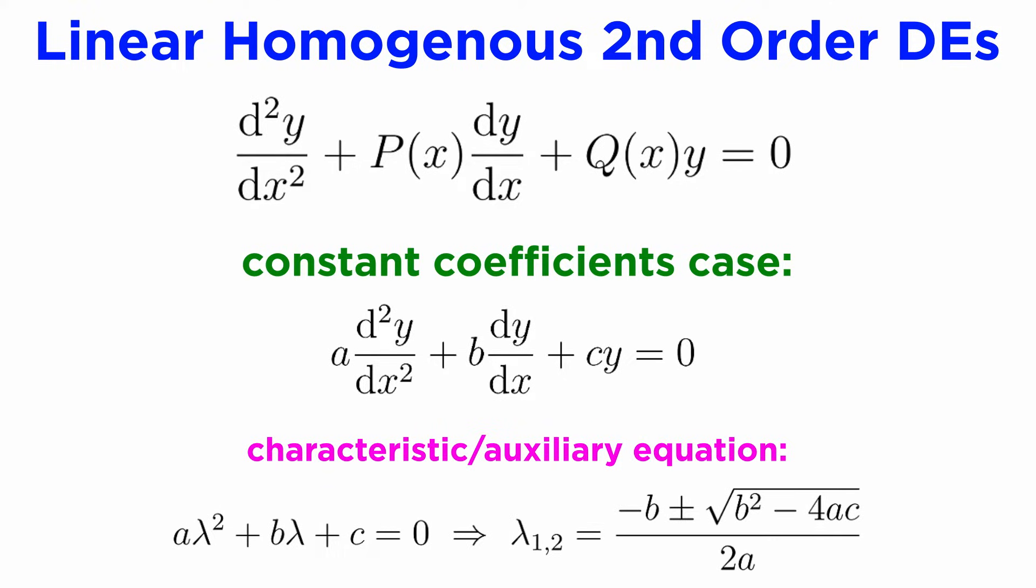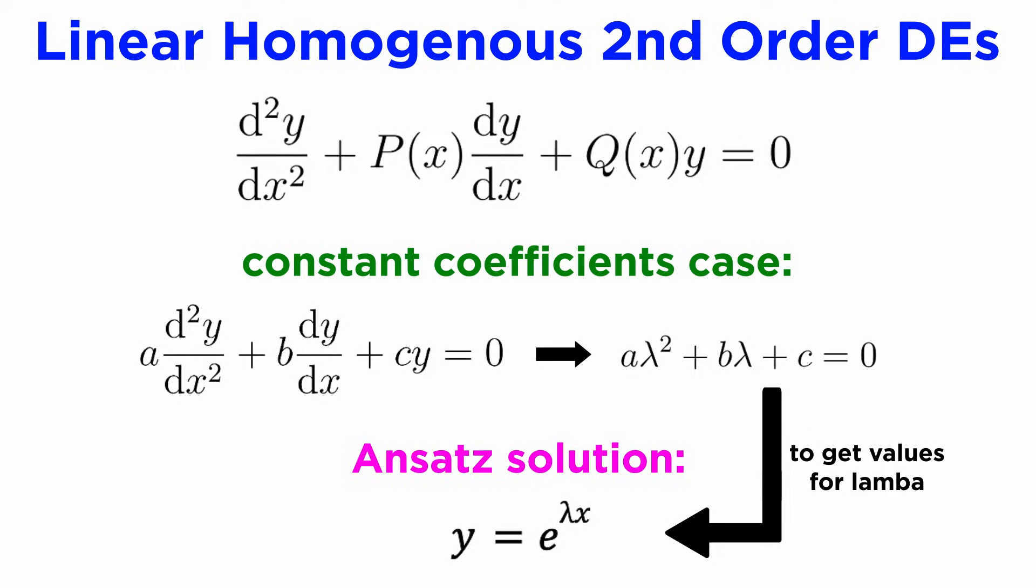We can solve this using the quadratic equation to get two solutions, which we'll call lambda 1 and lambda 2. It turns out that if we take y equals e to the lambda x as a guess solution, or ansatz solution, then this will always satisfy our differential equation in the cases where lambda is either lambda 1 or lambda 2 from our characteristic equation.